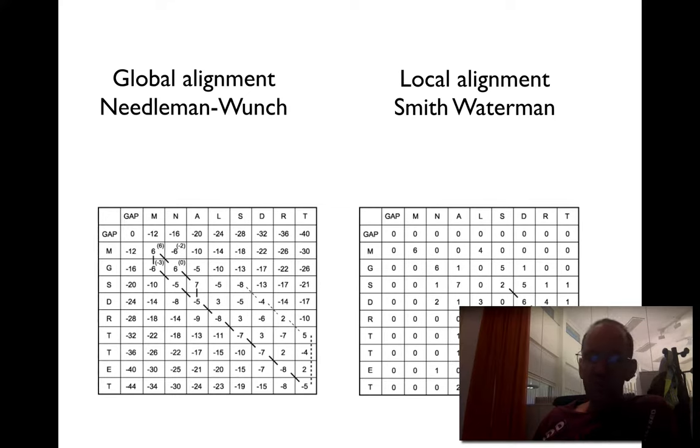The only difference is that as soon as you have a negative value, you replace it by zero. If you take these two sequences, MNALSDRT and MGSDRTTET, and use a gap penalty starting with eight and then four for each additional gap, you start filling out the matrix with values: zero, twelve, sixteen, twenty, twenty-four, thirty-four.